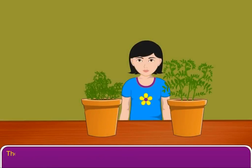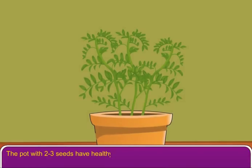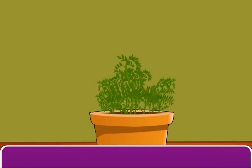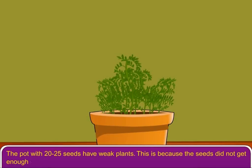Observe and record the growth of new plants. The pot with two or three seeds has healthy plants. The pot with 20 to 25 seeds has weak plants. This is because the seeds did not get enough sunlight, water, and space to grow.